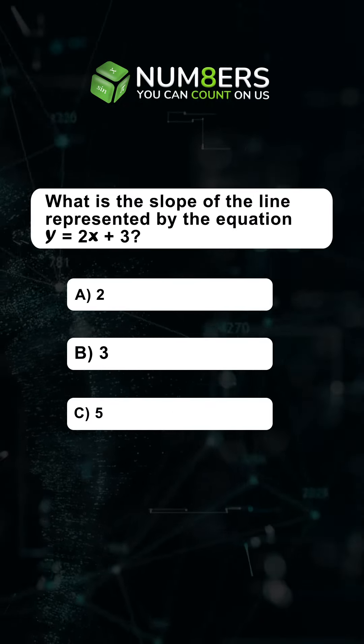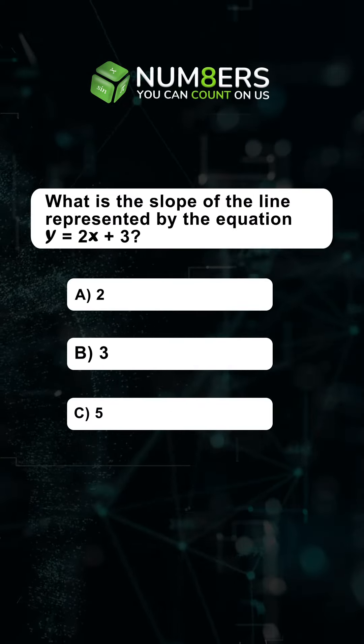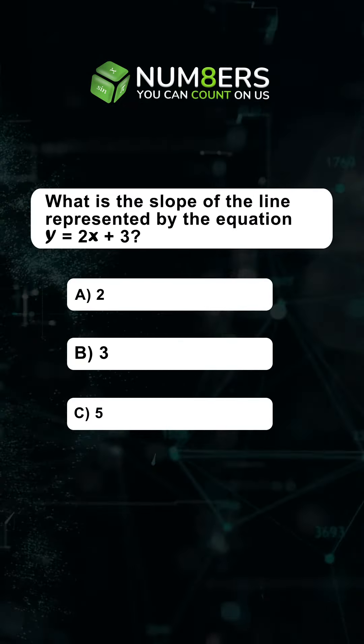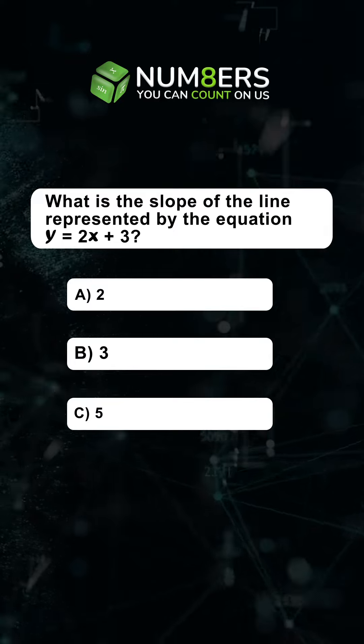What is the slope of the line represented by the equation y is equal to 2x plus 3?